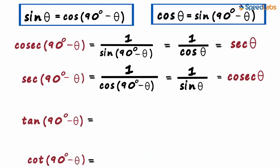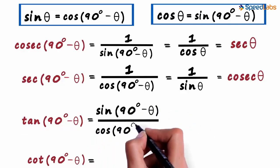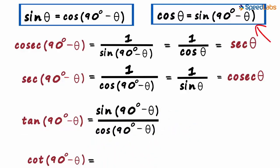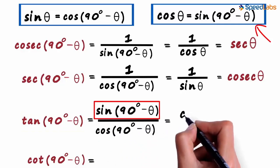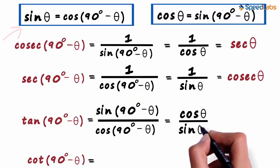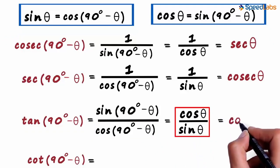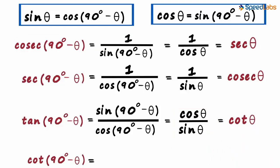Let's see how simple it is. Tan(90° - θ) can be written as sin(90° - θ) by cos(90° - θ). From this equation, sin(90° - θ) can be written as cos θ, and cos(90° - θ) can be written as sin θ. This looks familiar — cos θ by sin θ is cot θ. The cotangent of any angle equals the tangent of its complementary angle.